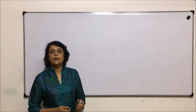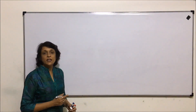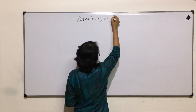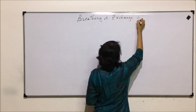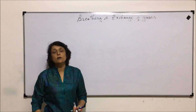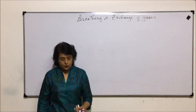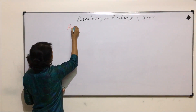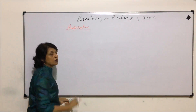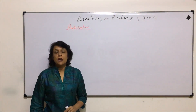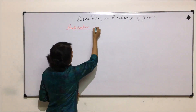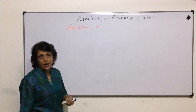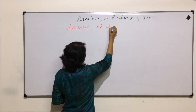We are starting with a new chapter in the unit of human physiology: breathing and exchange of gases. This chapter is normally referred to as the respiratory system. Respiration means breaking down of respiratory fuel to obtain energy, and this can take place in the presence of oxygen or in the absence of oxygen. Accordingly, we classify this into aerobic and anaerobic respiration.